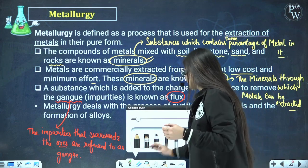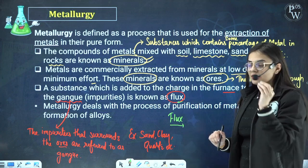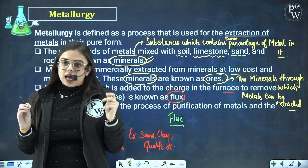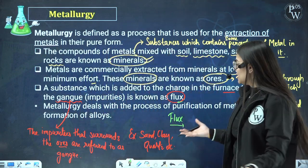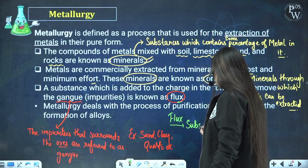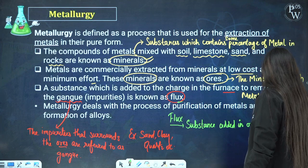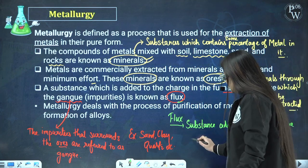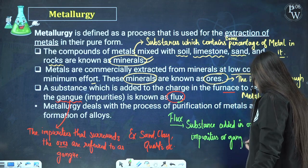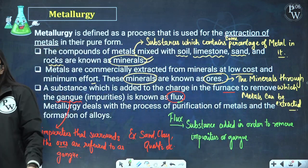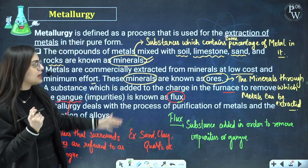There is one more term — flux. Flux is basically the substance that is added so that we can remove the impurities. A substance added to the ores so that all the impurities get removed is referred to as flux. It is basically a substance added in order to remove the impurities or gang. Kindly write all these lines in your NCRT so it will give you a quick recap while revising.